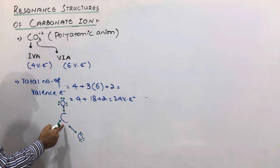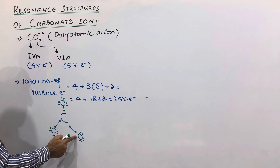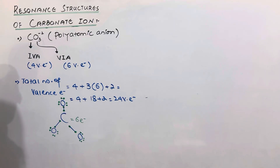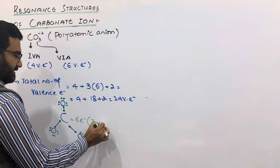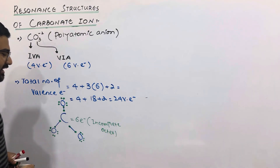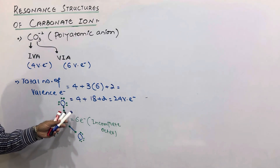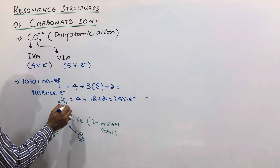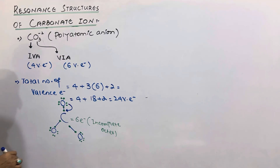Now let us look at the carbon atom. It has 6 electrons in its valence shell in the form of 3 bond pairs. So its octet is not completed — it will have an incomplete octet. In order to complete the octet of carbon, one of the oxygen atoms will have to share a lone pair with carbon. Suppose this oxygen shares one lone pair with carbon — what will be the form of this structure?